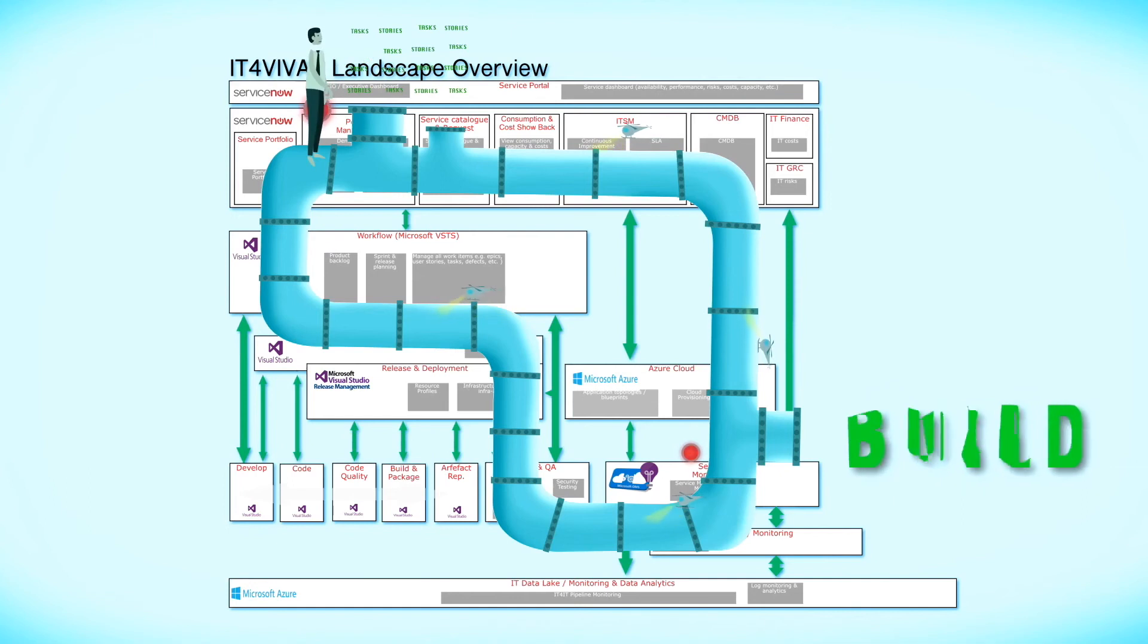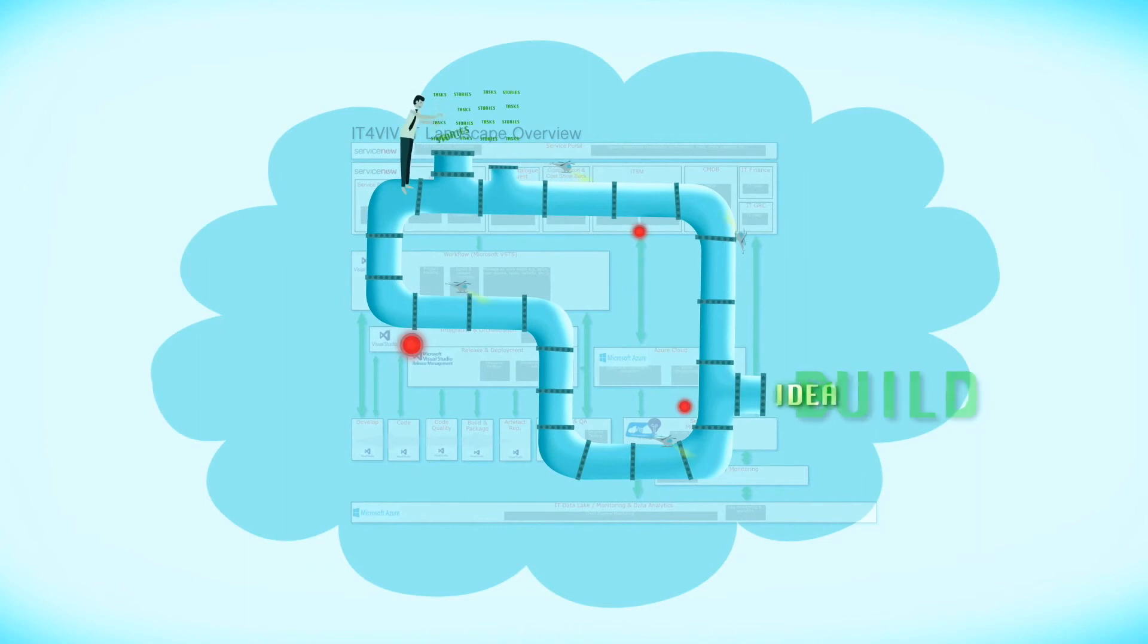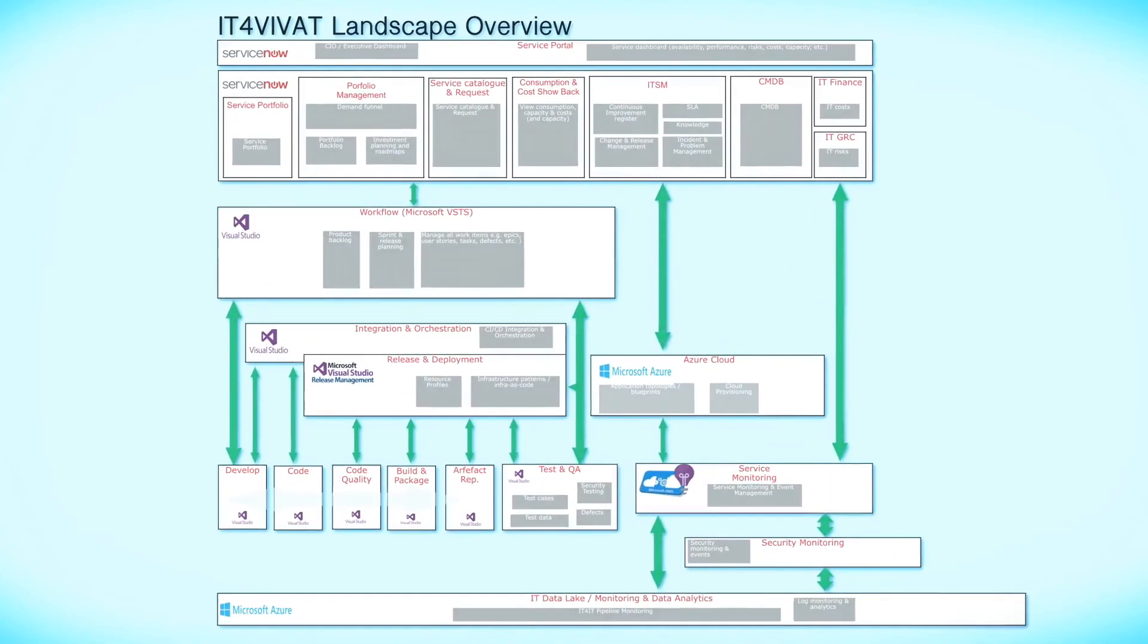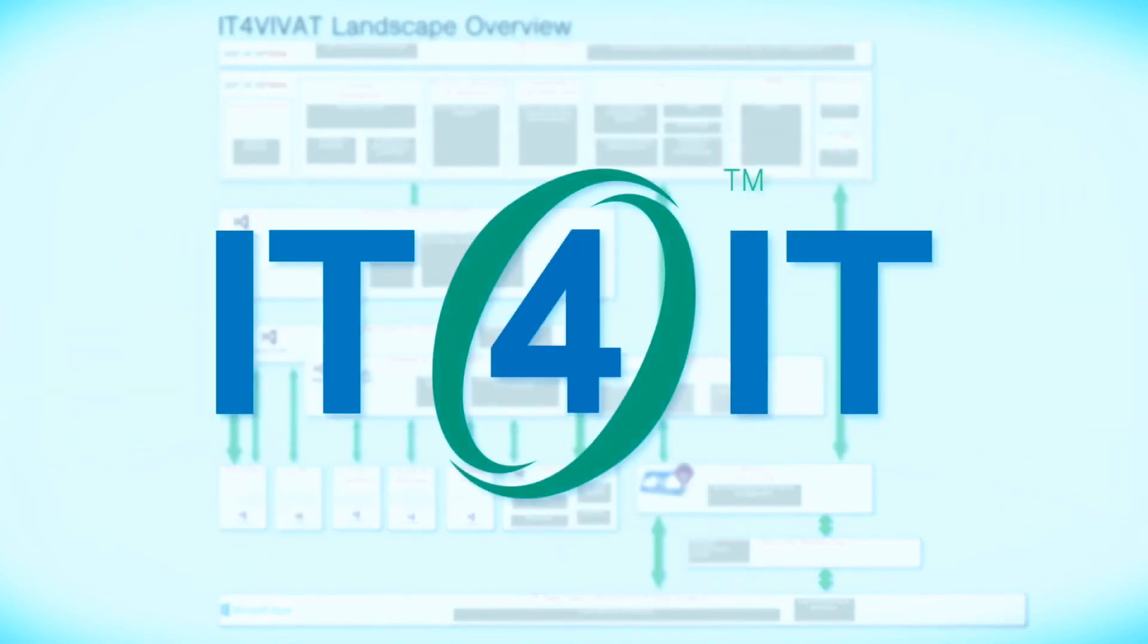VIVAT has decided to construct the entire pipeline in the cloud. However, as we pointed out previously, IT for IT leaves that choice to you. A final and extremely valuable characteristic is that all data from the pipeline is technology neutral, stored in a logical data warehouse. This enables the data to be used in the future, regardless of technology stack changes.